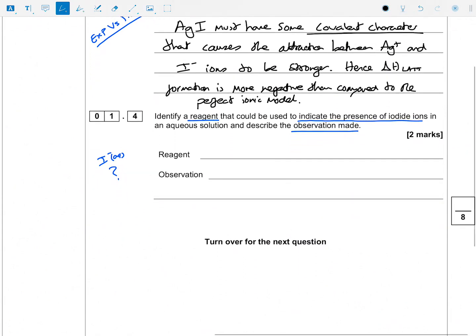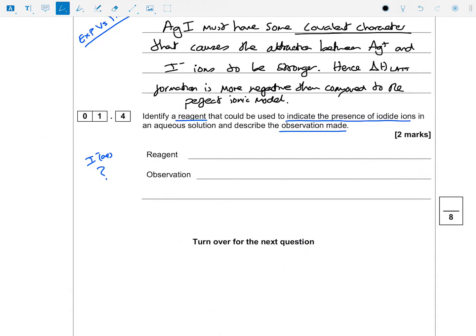So 1.4. Identify a reagent that could be used to indicate the presence of iodide ions in aqueous solution. So what we're looking for here is essentially just silver nitrate. We've used this a lot, silver nitrate. Observation: it will be a pale yellow precipitate, and I'm just going to show off here of AgI solid.